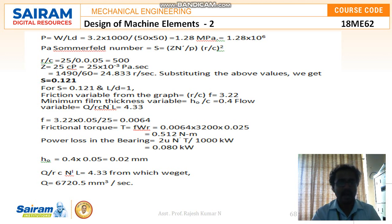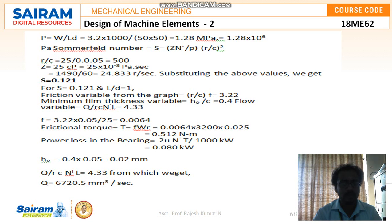For S = 0.121 and l/d = 1, reading from the graph: the frictional variable (r/c) × f = 3.22, the minimum film thickness variable h₀/c = 0.4, and the flow variable Q / (r·c·N'·l) = 4.33. From these, the coefficient of friction f = 3.22 × 0.05 / 25 = 0.0064. Frictional torque T = f × W × r = 0.0064 × 3200 × 0.025 = 0.512 N·m, or equivalently 0.512 × 10³ N·mm.